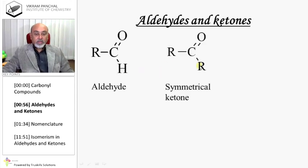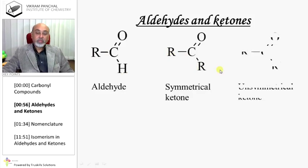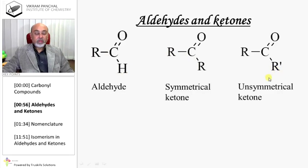This is an aldehyde and this is a ketone. When both alkyl groups attached to the carbonyl are the same, it is known as a symmetrical ketone. When the alkyl groups are different, it is known as an asymmetrical ketone.